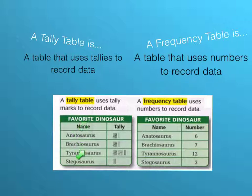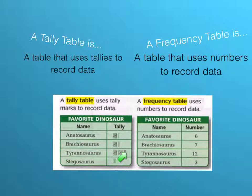So there are two columns. Each column is named — this is the name of the dinosaur, and this is the number of tallies. The title of this is Favorite Dinosaur. So we have the names and then we have the number of tallies for every person who liked that particular dinosaur.